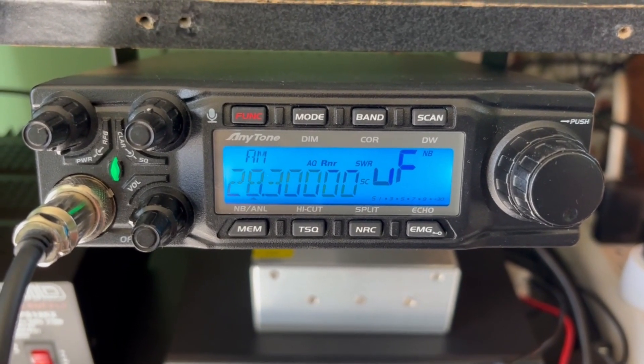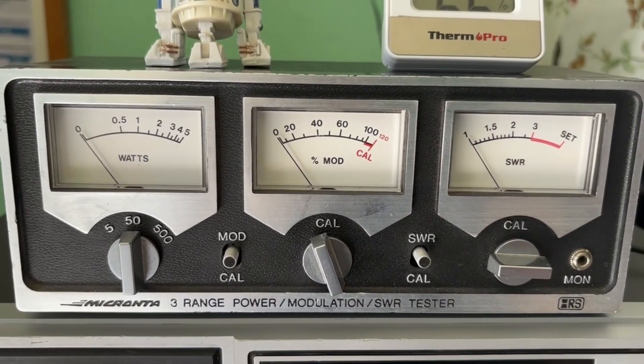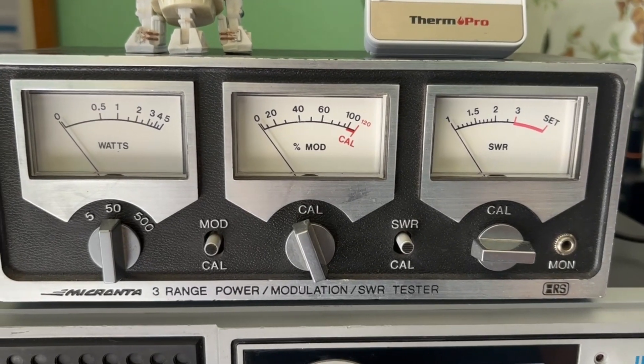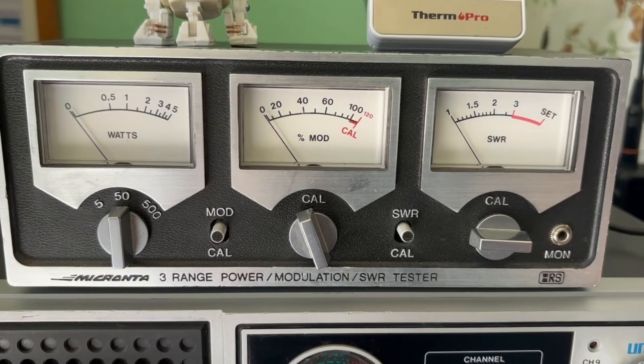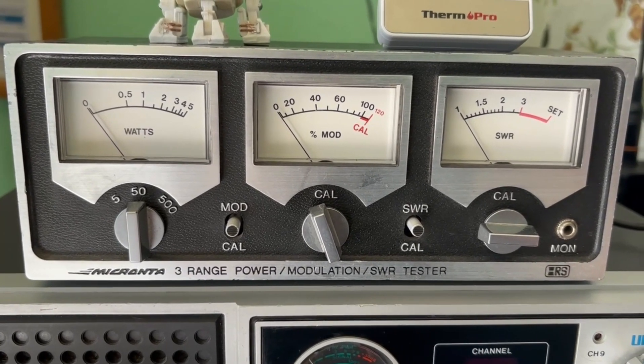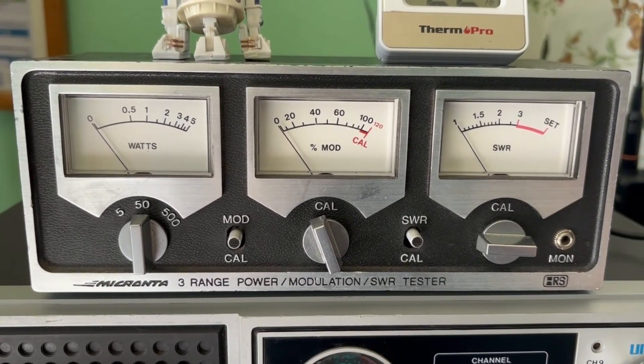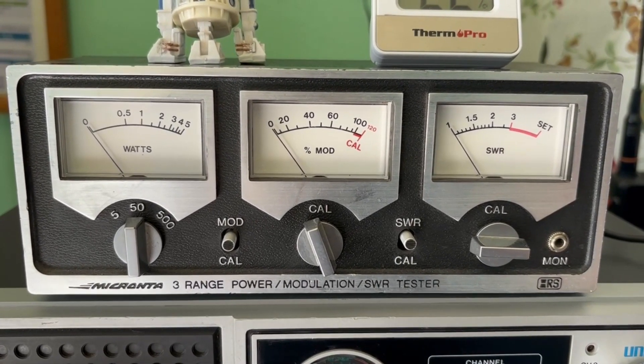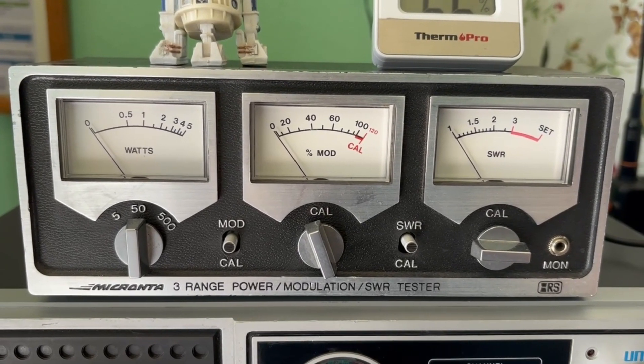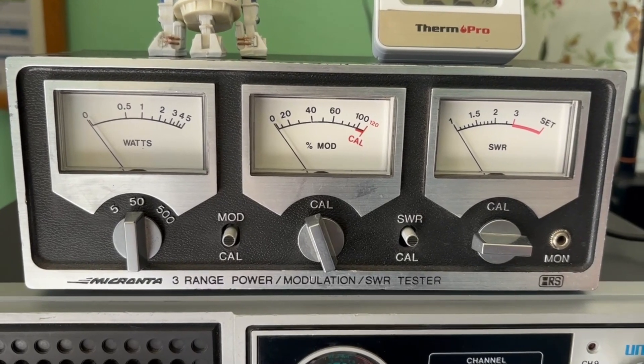Now I don't have an expensive meter like the Bird meter to really get a real accurate reading of the power output of this radio, but of all my meters that I do have, this old Radio Shack one I think is from the early mid-80s that I picked out a rummage sale for $30, it is by far the most accurate of all the meters I've had.